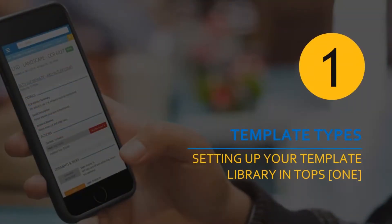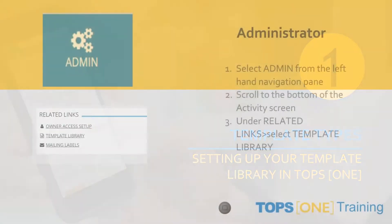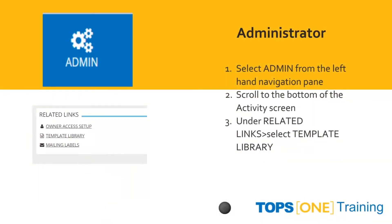Chapter 1: Template Types. Setting up your own template library in TOPS One. Along the left-hand navigation, select Administrator, then scroll to the bottom of the activity screen. Under Related Links, select Template Library to navigate to that area.